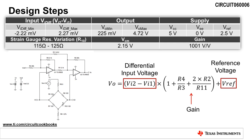The difference between VI2 and VI1 is the differential input voltage. The differential input voltage is amplified by the gain, which depends on R2, R3, R4, and R11. A reference voltage, or Vref, is present so the circuit can measure both positive and negative differential input voltages.